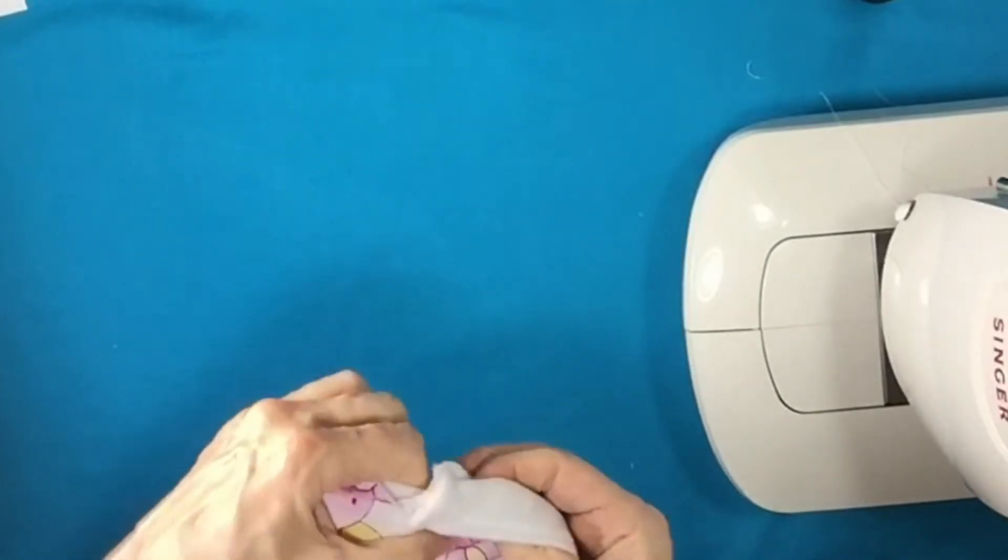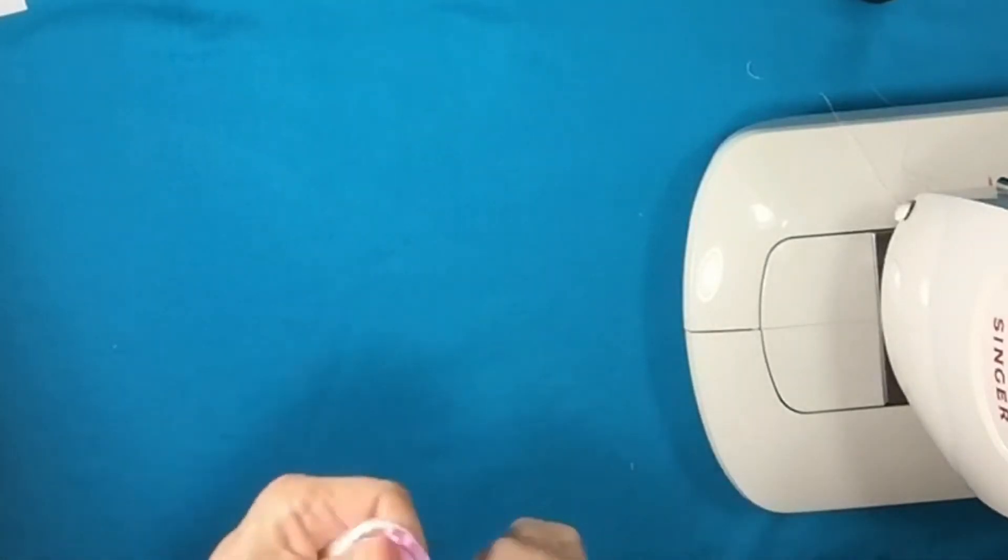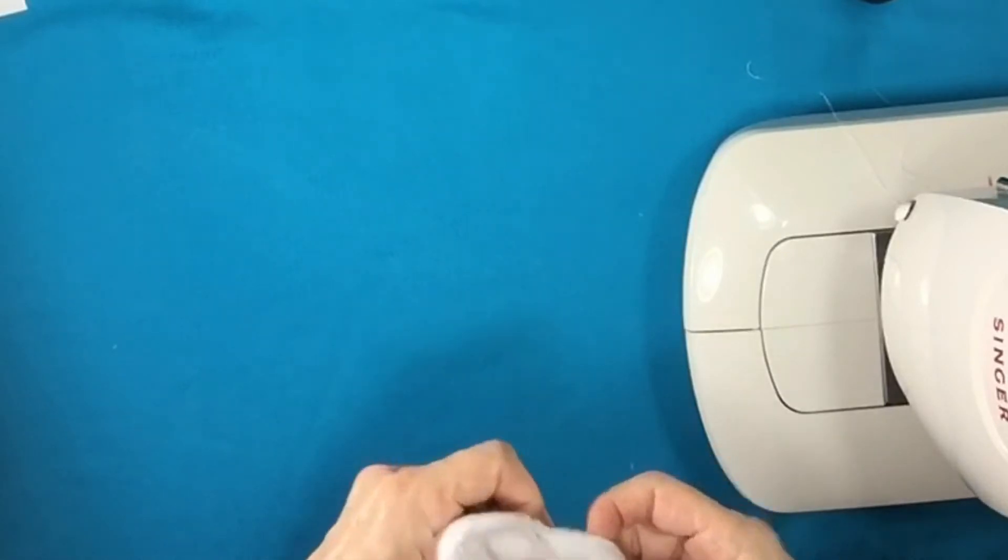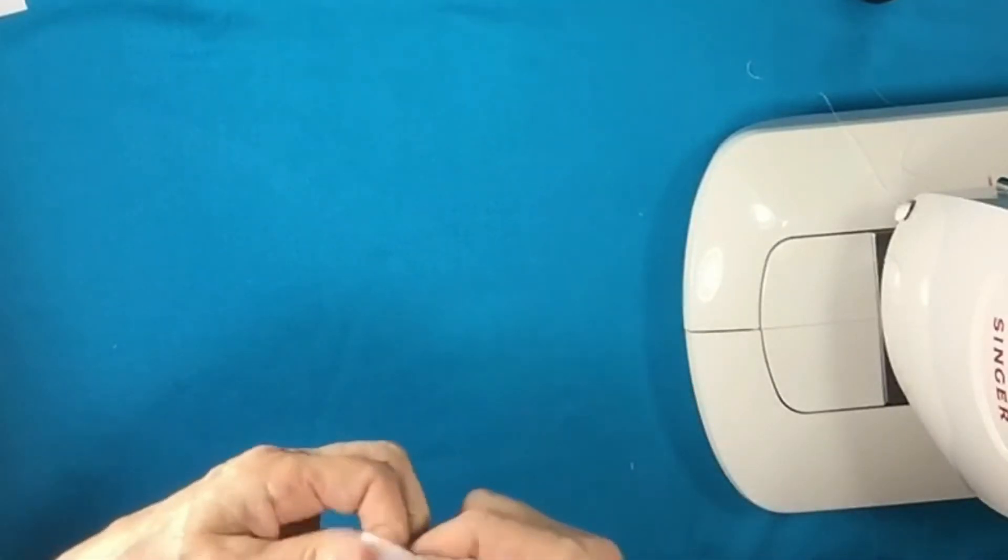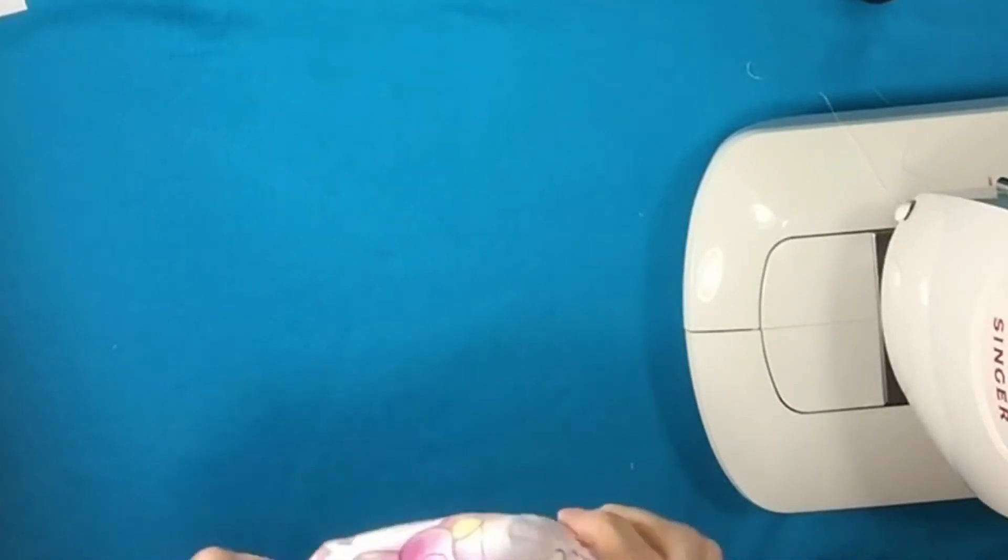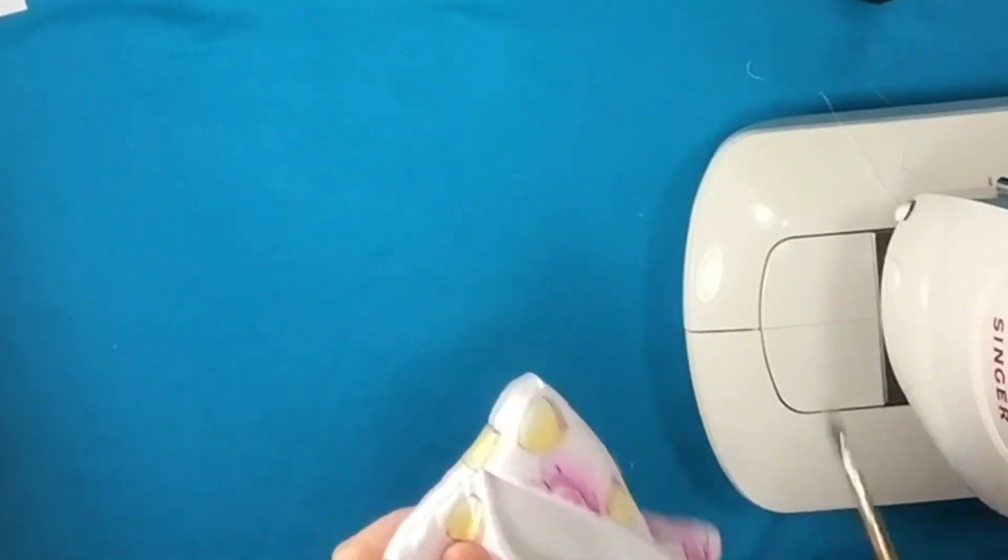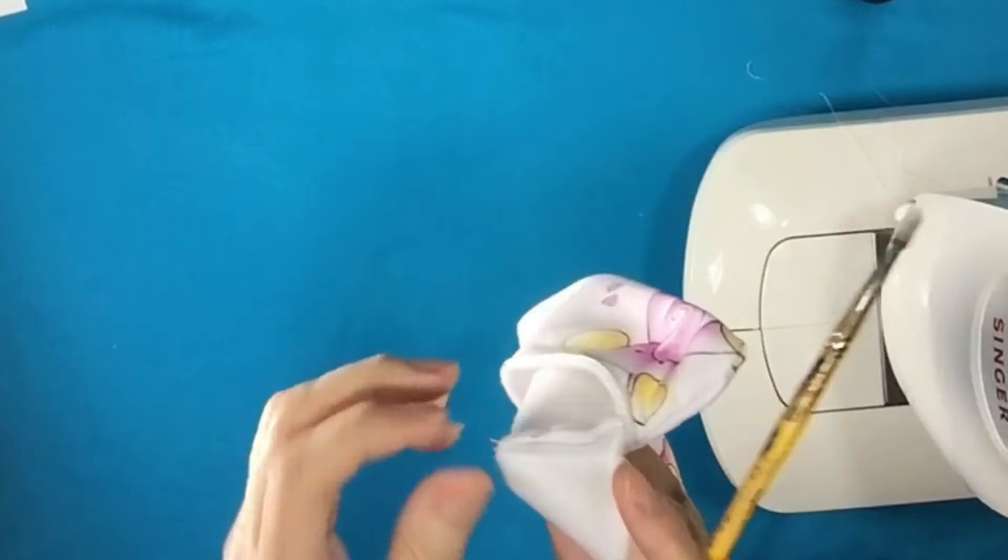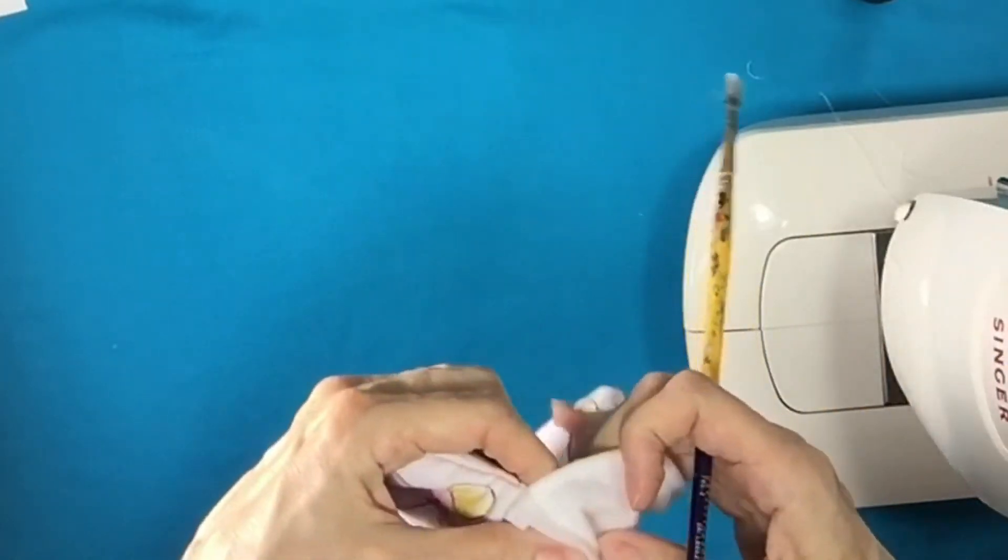You're going to turn it inside out. Try to get the corners out as best as you can. If you're having too much of a hard time with your corners, you want to make sure you clip the curves too before turning it.